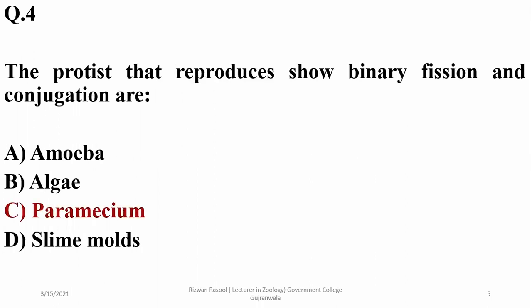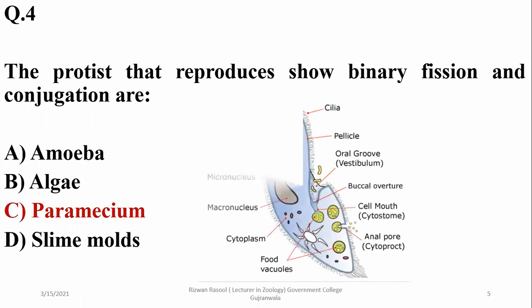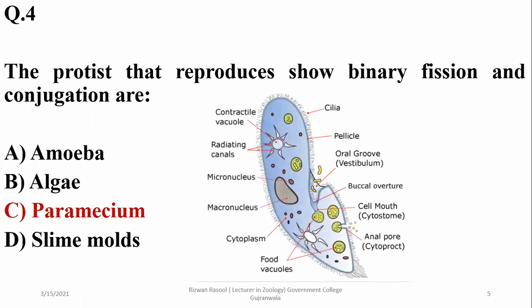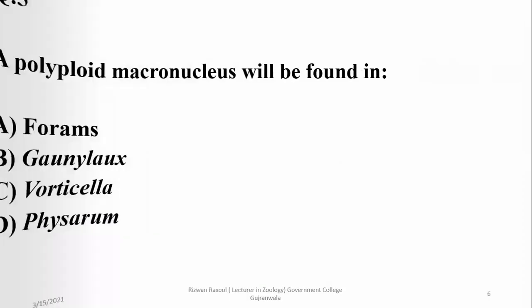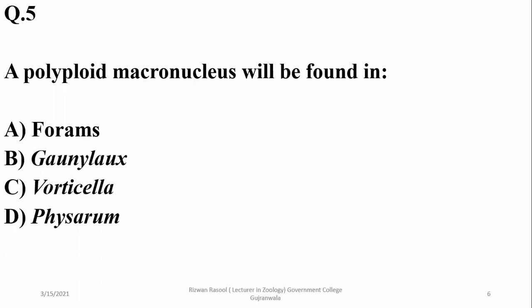The protist that reproduces by both binary fission and conjugation is Paramecium. A polyploid macronucleus is found in a ciliate — that is Vorticella.